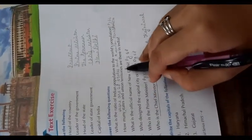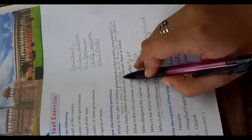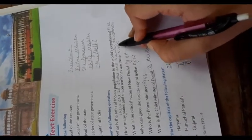Now question number 2: how many states and union territories are there in India? There are 28 states and 9 union territories.